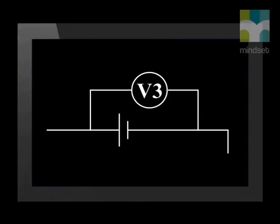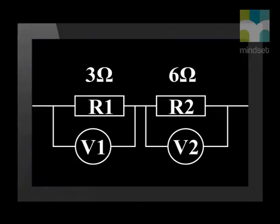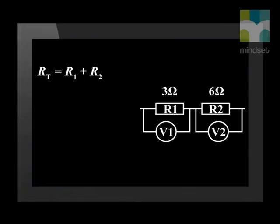Now we need to calculate V3, which represents the total potential difference of the circuit. To calculate the total potential difference, we must calculate the total resistance. Let us consider the two resistors together — we need to reduce two resistors to one. We know that when resistors are in series, we find their total resistance by adding them. Therefore, R total equals R1 plus R2, which in this case is three ohms plus six ohms, giving a total of nine ohms.